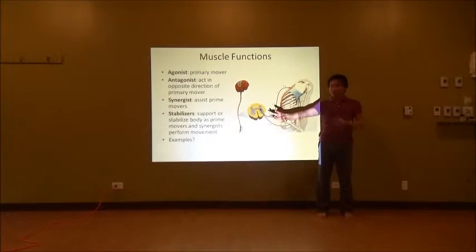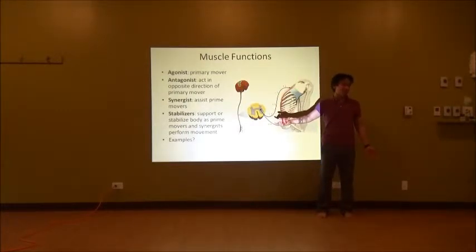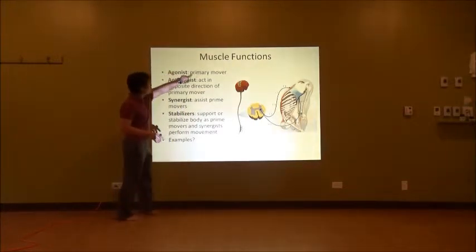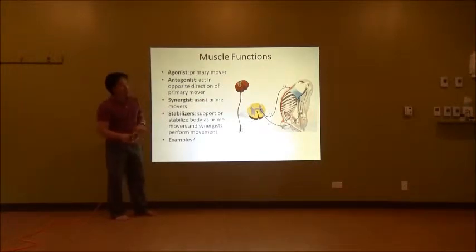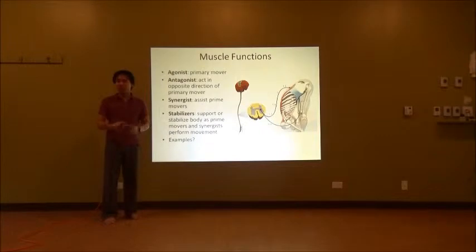There's an inherent conflict of interest between these two muscles — one pulls this way and one pulls the other way. One is the agonist, one is the antagonist. The agonist we also call the primary mover, and the synergist assists the prime mover. Synergy is when you bring your resources together to make a bigger or better outcome.